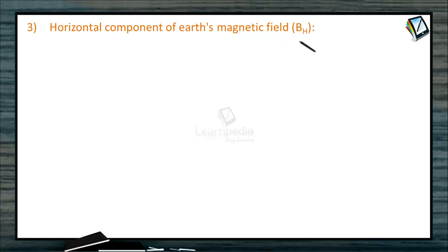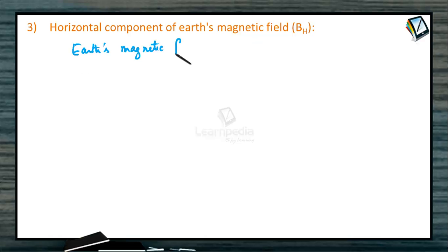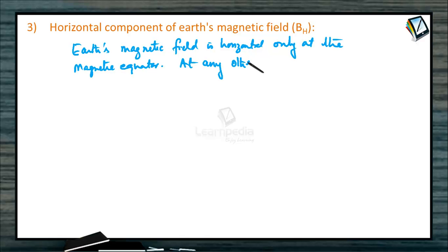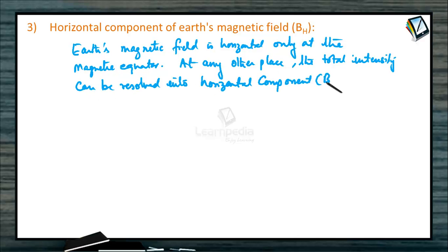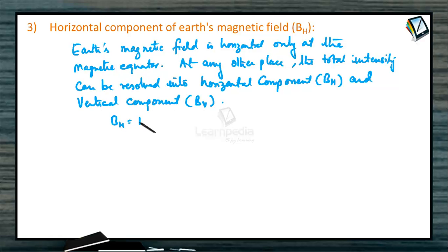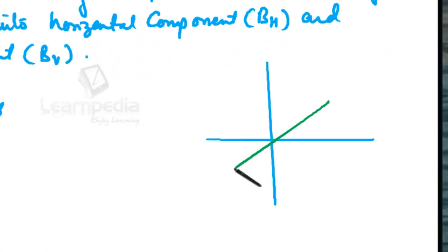The next element is the horizontal component of Earth's magnetic field, BH. Earth's magnetic field is horizontal only at the magnetic equator. At any other place, the total intensity can be resolved into two components: the horizontal component BH and the vertical component BV.